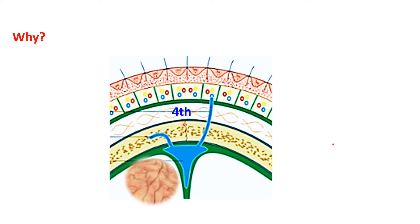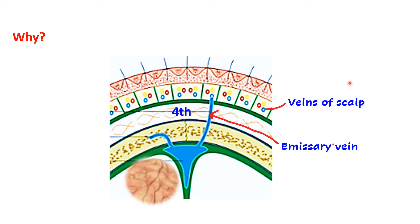Here you can see there is a vein known as an emissary vein, which passes through this fourth layer — the loose areolar tissue layer. Emissary veins are those veins which connect the extracranial veins with the intracranial dural venous sinuses, and they do not have valves. Therefore, infection can travel from extracranial regions to the cranial cavity. In the second layer we have the veins of the scalp, and inside the cranial cavity we have the dural venous sinus — the superior sagittal sinus — and these two are connected via the emissary vein.